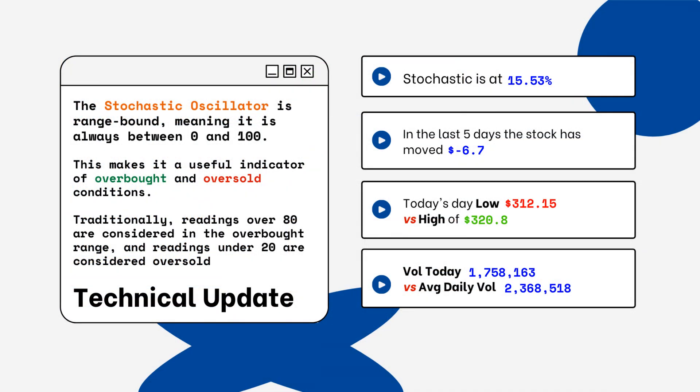You can see on the right side where the stochastic level is on this particular stock. This is only a technical update because you want to look for overbought and oversold conditions. Readings over 80% are considered overbought, and readings below 20% are considered oversold. You want to be aware of this when looking at a particular stock.